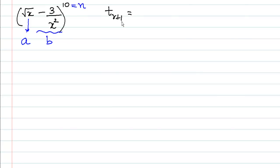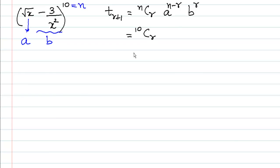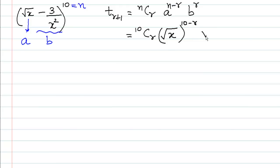T(r+1) = nCr · a^(n−r) · b^r. We do not know which term is the constant term, so we do not know the value of r. Substituting n = 10, a = √x, we write: T(r+1) = 10Cr · (√x)^(10−r) · (−3/x²)^r.